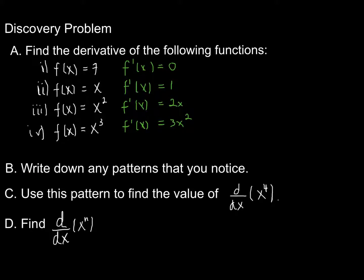The pattern you noticed probably got you to find the derivative of x to the fourth, which is 4x to the third. Following this pattern, you might have guessed that if you're taking the derivative of a power function — x to some power, whatever that power may be — you take the power, multiply it as the coefficient, and then decrease the value of the power by 1.